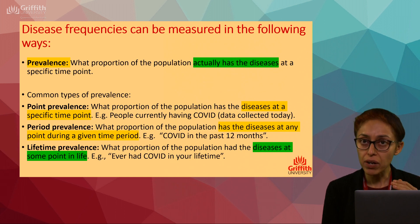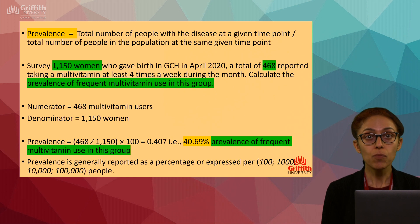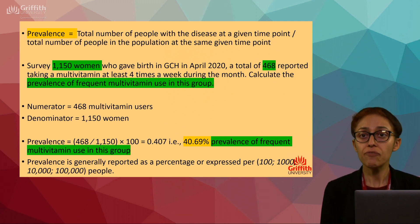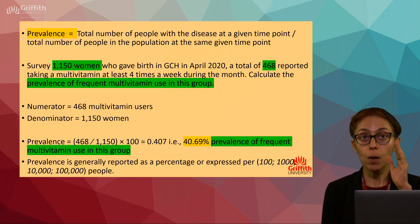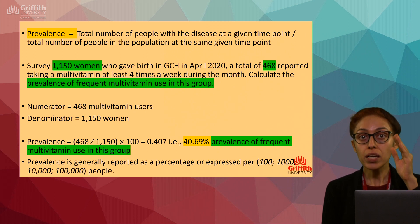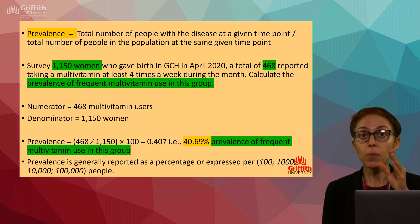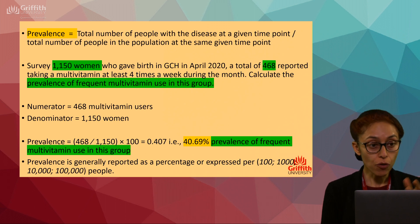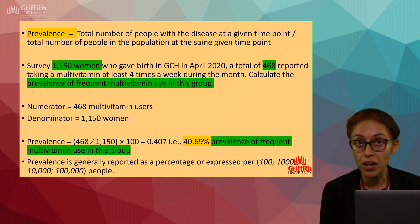Now, how do we calculate prevalence? It's a very simple calculation — do not get overwhelmed. The formula is: total number of people with the disease at a given time point, divided by the total number of people in the population at the same time point. For example, you have surveyed 1,150 women who gave birth at the Gold Coast Hospital in April 2020.